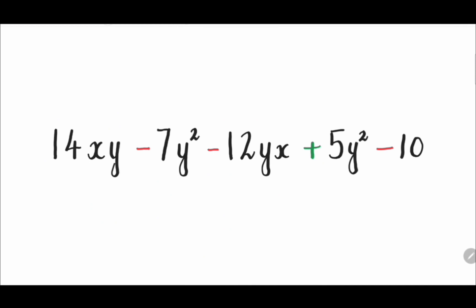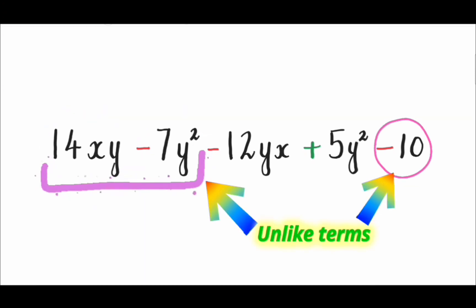But we cannot group the terms 14xy, -7y², and -10, as they don't have the same variables and powers. These are called unlike terms.